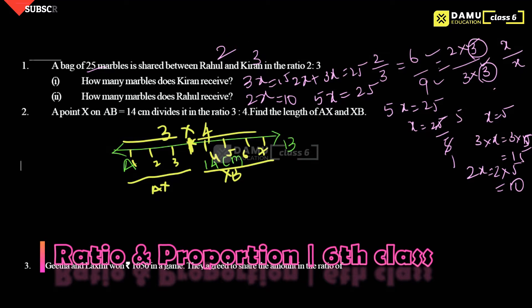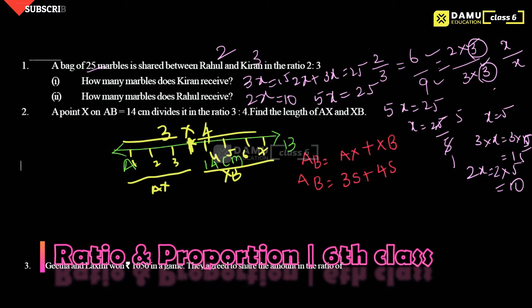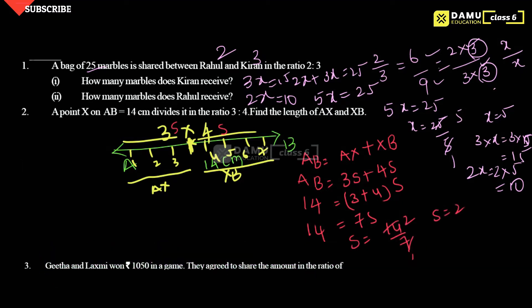For that, the sum of all lengths AB will be equal to AX plus XB. Taking AX as 3s and XB as 4s, we don't know the exact line length, but AB is 14. So 3s plus 4s, that is 7s, equals 14. Then s will be equal to 14 by 7, which gives s equal to 2.